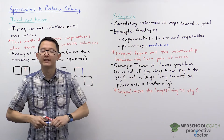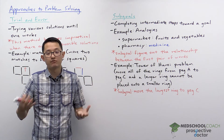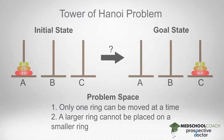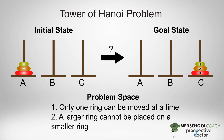As another example, we can consider the Tower of Hanoi problem. Take a look at this diagram. You can see there are three pegs: peg A, peg B, and peg C. Initially, there are three rings on peg A, with the largest ring on the bottom, the middle ring in the middle, and the smallest ring on top. The goal state is to have all three rings on peg C. The one rule is that you can move the rings one by one, and a larger ring cannot be placed on a smaller ring.